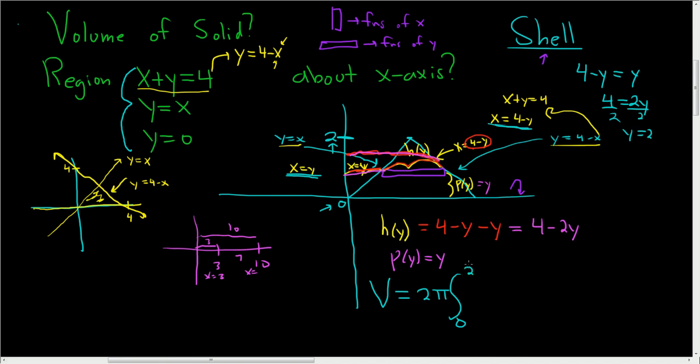And the formula says that we take p and we multiply it by h. So p is just y. So y, and then h is 4 minus 2y, and then dy. And if you put this in a calculator, you should get 16π divided by 3. So this was a harder example to do. I hope this video made sense.